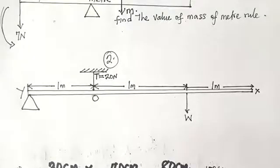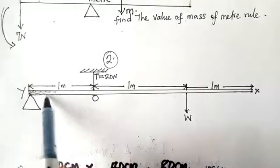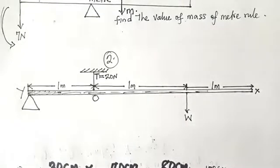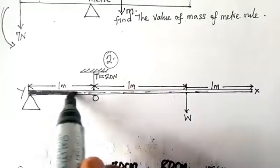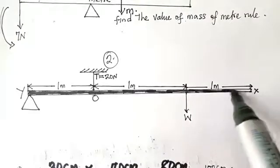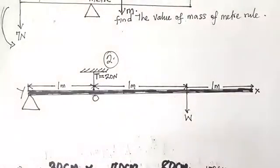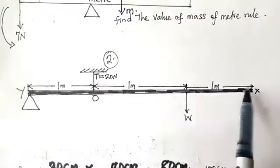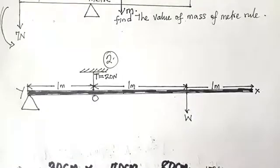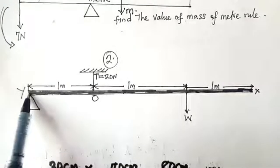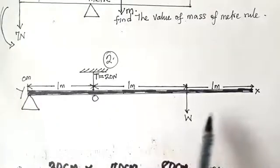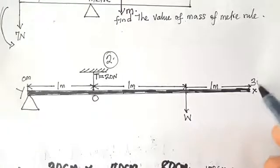This second case: this is the meter rule, and from here to here is one meter, from here to here is another one meter, and from here to here is one meter — so the total length of this meter rule is three meters. Since the total length is three meters, the balance point is at the zero mark — this is at zero meters — and at this end you have three meters, and that is the mark X.